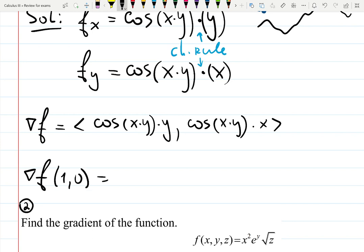(1,0). So I'm plugging 1 and 0. That's going to be cosine of 0 times 0 gives me 0, cosine of 0 times 1 gives me 1, because cosine of 0 is 1. And that is the answer.